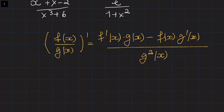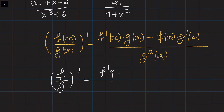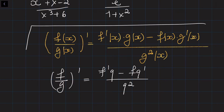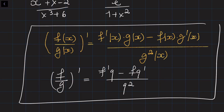We can also write this rule without all the x's. The derivative of f over g equals f'g minus fg' divided by g squared. Memorizing this formula in this compact form is much easier.